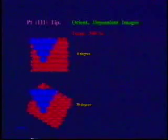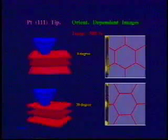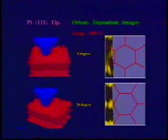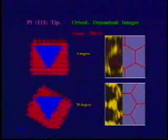The relative orientation between the probe and the surface also affects the scanned image. The expected honeycomb structure can be obtained if the relative orientation is properly chosen.